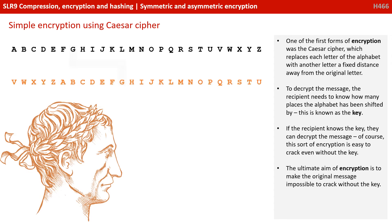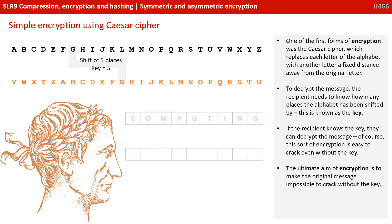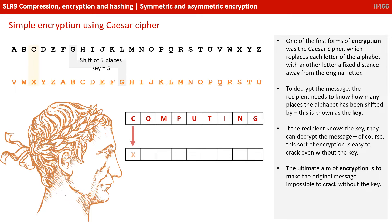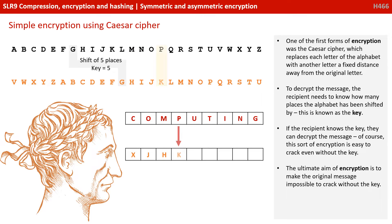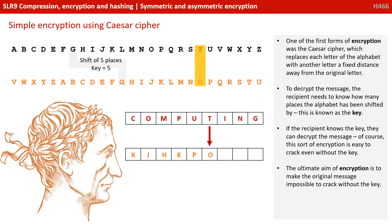One of the first forms of encryption was the Caesar cipher, which replaces each letter of the alphabet with another letter a fixed distance away from the original. To decrypt the message, the recipient needs to know how many places the alphabet has been shifted. This is known as the key.